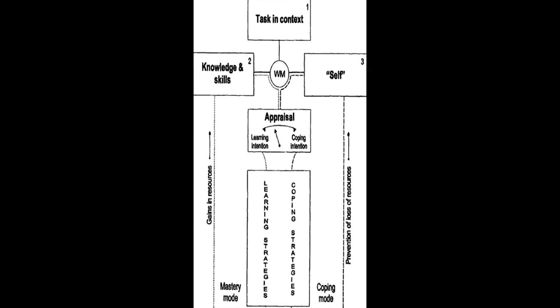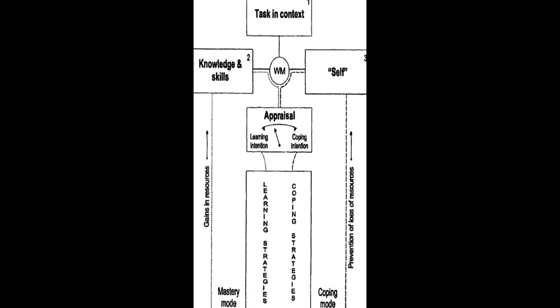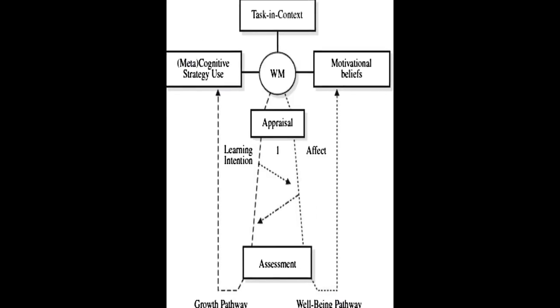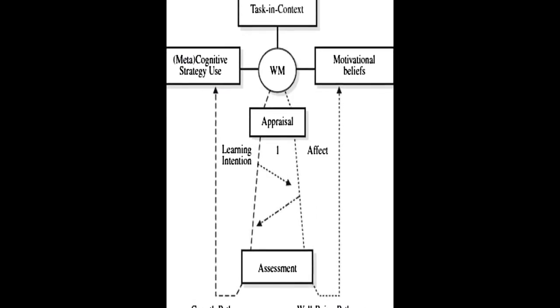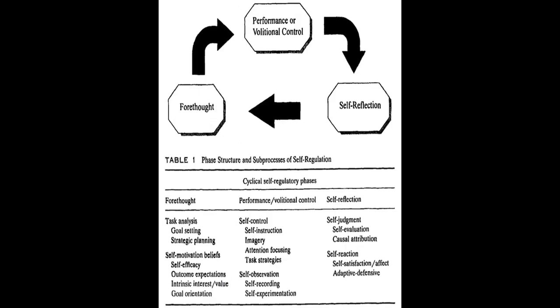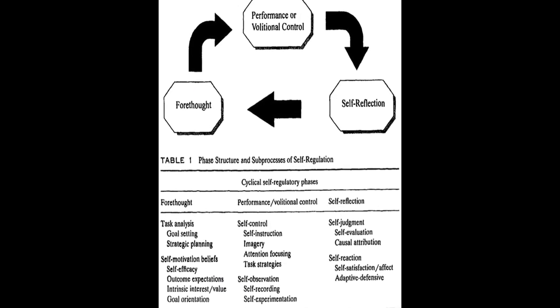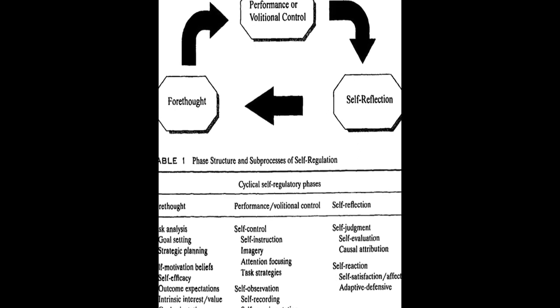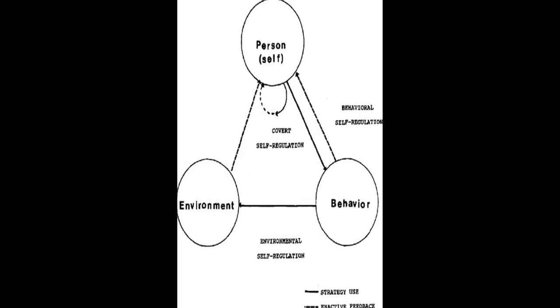Six models of SRL are analyzed and compared in this paper: Zimmerman, Bokaerts, Winne and Hadwin, Pintrich, Efklides and Hadwin, Järvelä, and Miller. Each model is explored in detail, including history and development, description, empirical support, and instruments constructed based on the model.